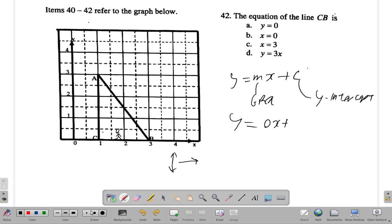So it's zero x plus - suppose you should extend CB, where would it cut the y-axis? Let's see, if you extend CB back, it would cut the y-axis right here at zero. So it's y equals zero x plus zero, so y equals zero.